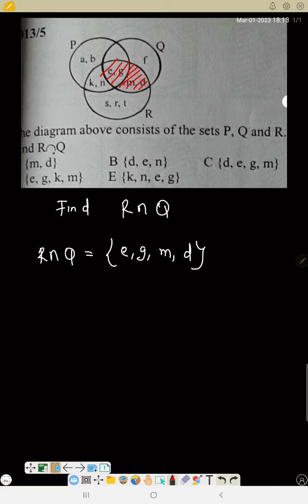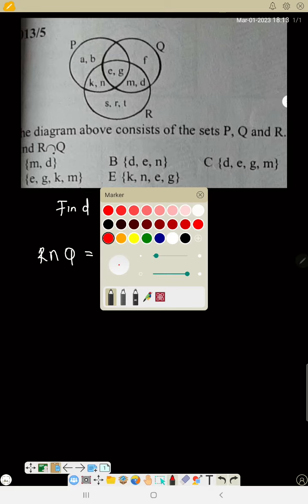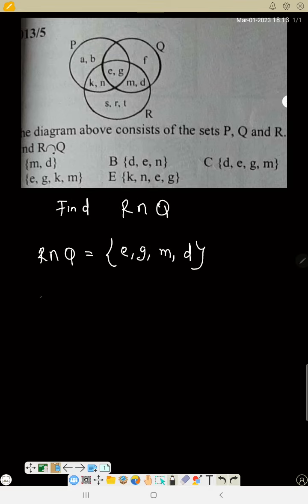See how they arrange their option. The way they are in the option, R intersection Q would be D, E, G, M. So that is option C.